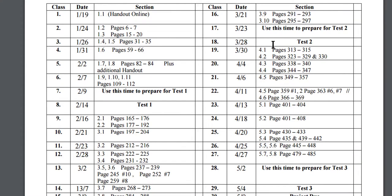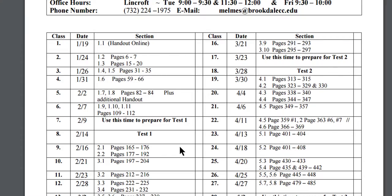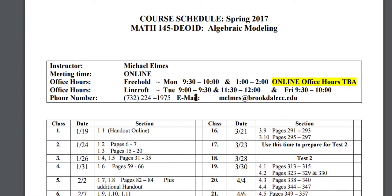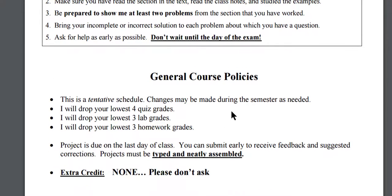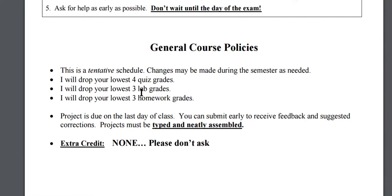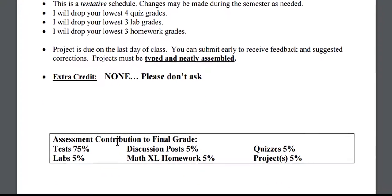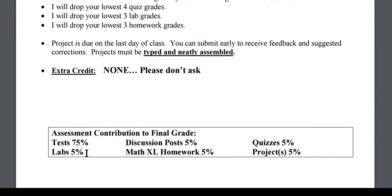You'll see the test dates. Tests won't happen exactly on those listed dates — you'll take test one the week of the 14th or test two the week of the 28th, and you're going to take those at the testing center. As we get closer to those dates, I will tell you where and when to schedule your tests. The second page has office procedures: I'll drop your lowest four quiz grades, your lowest three lab grades, and so on. Most importantly, three tests count for 75% of your final grade, and all other activities account for 5%.